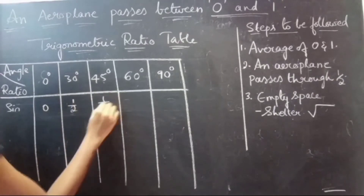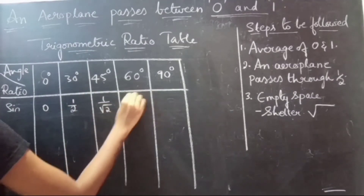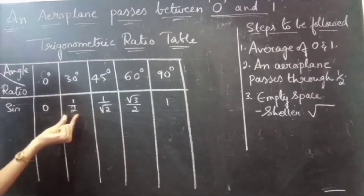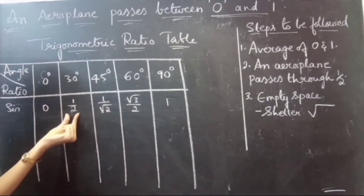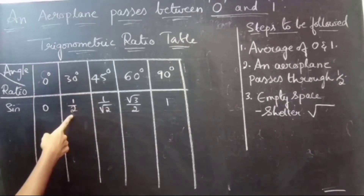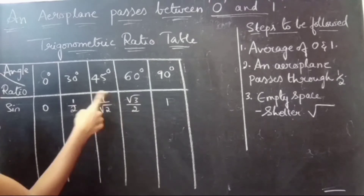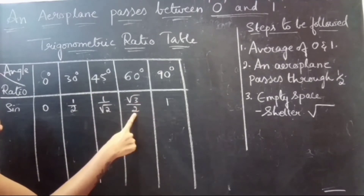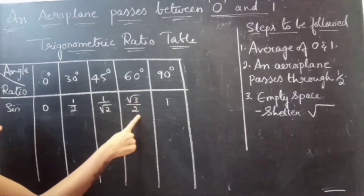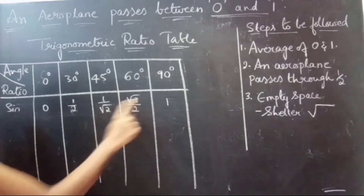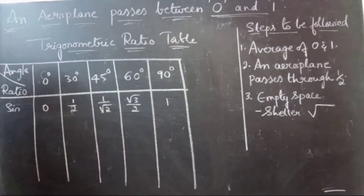So the sine values are: 0, 1 by 2, 1 by root 2, root 3 by 2, and 1. To summarize: you just take the average of 0 and 1 to get 1 by 2, then split 1 by 2 — placing 1 as the numerator of the first fraction and 2 in the denominator of the second fraction — and write root 2 and root 3 in the denominator and numerator of the first and second fractions respectively.